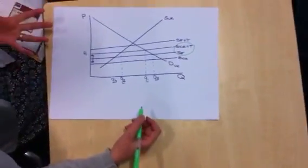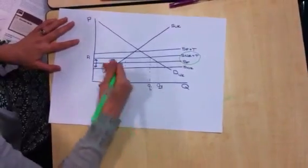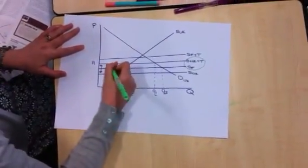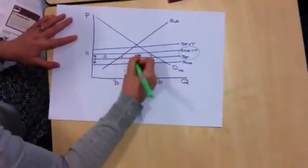Right, to work out whether we've benefited or lost out, or who's benefited and who's lost out, we need to be able to label these spaces. So you want to do one, two, the triangle there, three, four, and five.